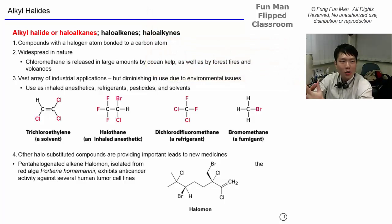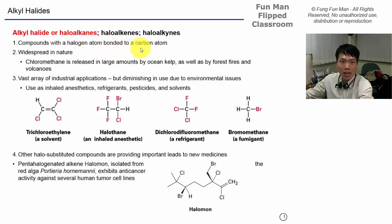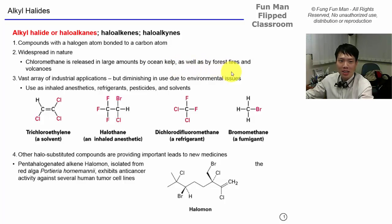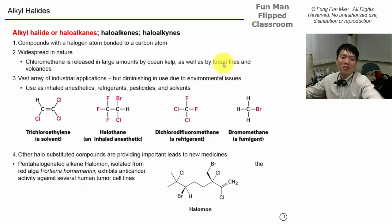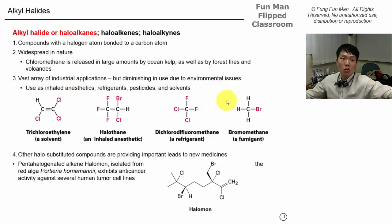Hello students. Now we are talking about alkyl halides, or halogenoalkanes — these are compounds with a halogen atom bonded to a carbon atom. They are omnipresent around us; chloromethane is released in large amounts by the ocean, during forest fires, and from volcanoes. Recently in Singapore we had a lot of air barbecue from neighbors down south — not a good smell. Halogenoalkanes also have massive industrial applications, but nowadays we are trying to decrease usage because they are harmful and cause environmental issues.